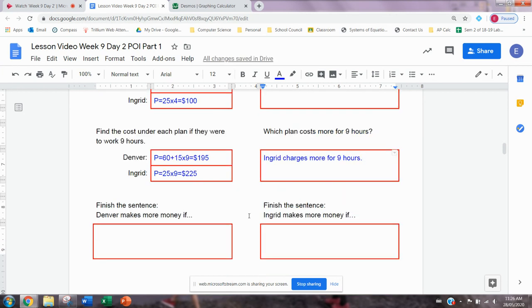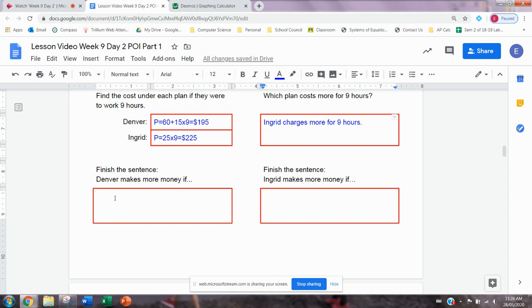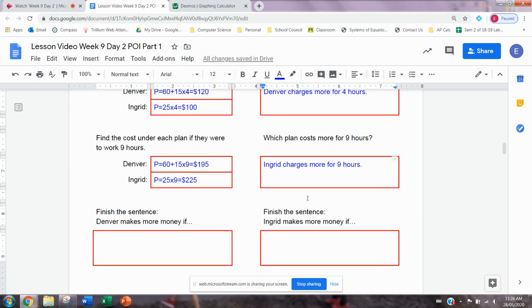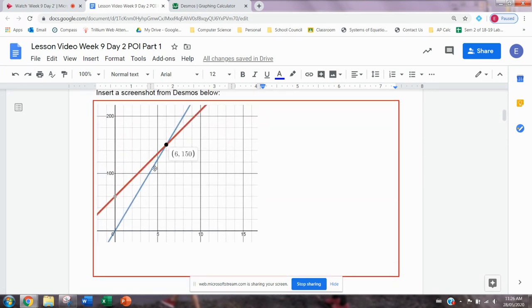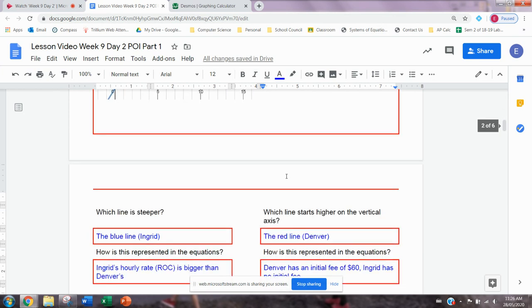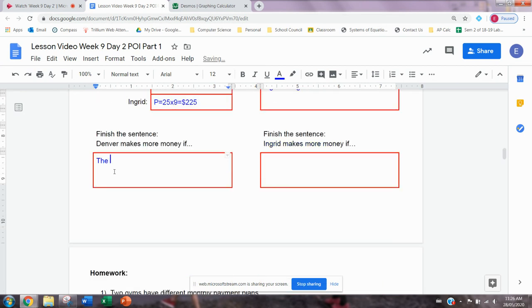So the last thing we want to do here is to finish this sentence, Denver makes more money if, and Ingrid makes more money if. Remember that they both charge the same for six hours of work. Let's look back to our graph. If we look before the six hours, so one hour, two hours, three hours, four hours, five hours, the red line is higher up. And remember, the red line was Denver. So Denver is charging more money before six hours. If we look after six hours, like seven, eight, nine, the blue line is higher up. So that's Ingrid's line. She's charging more money for more than six hours. So Denver makes more money if the job is less than six hours. Ingrid makes more money if the job is more than six hours. And remember that they charge the exact same. Both people would charge $150 if it was exactly six hours.